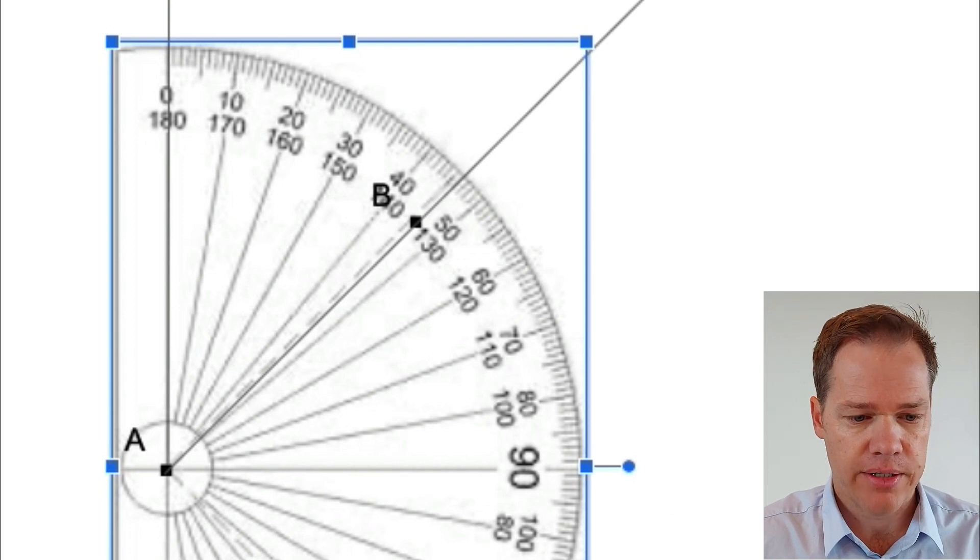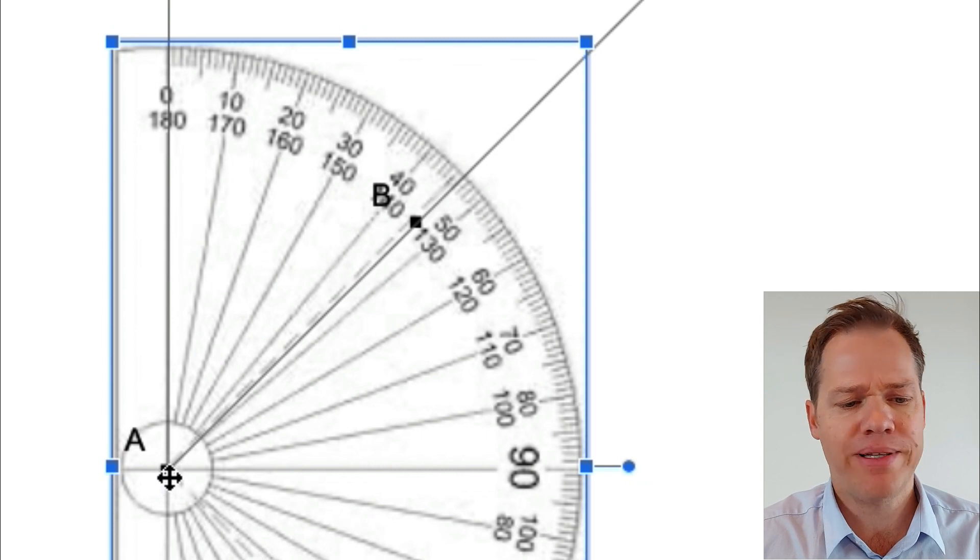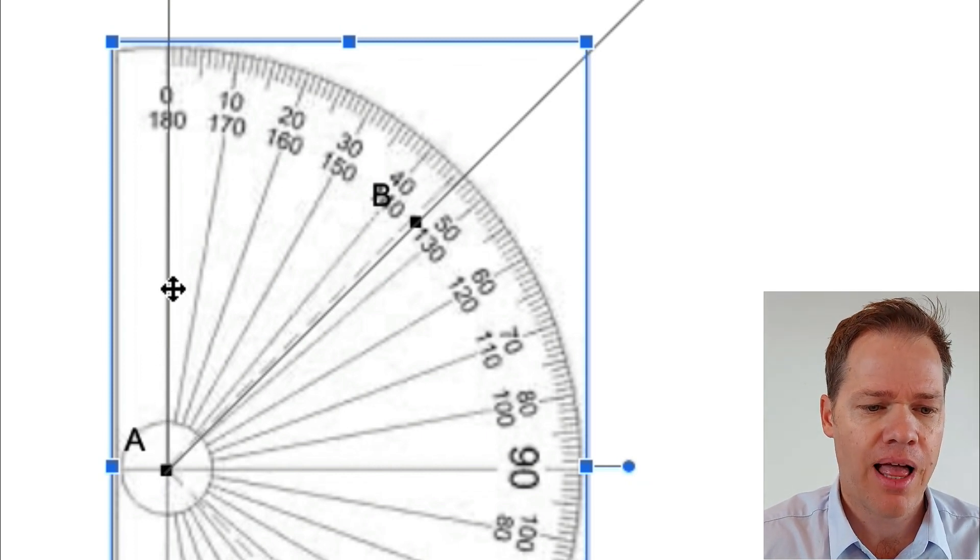There it is. So you can see where those lines intersect, it is exactly on point A, and then the vertical line must exactly be on that line that points to 0 and 180.